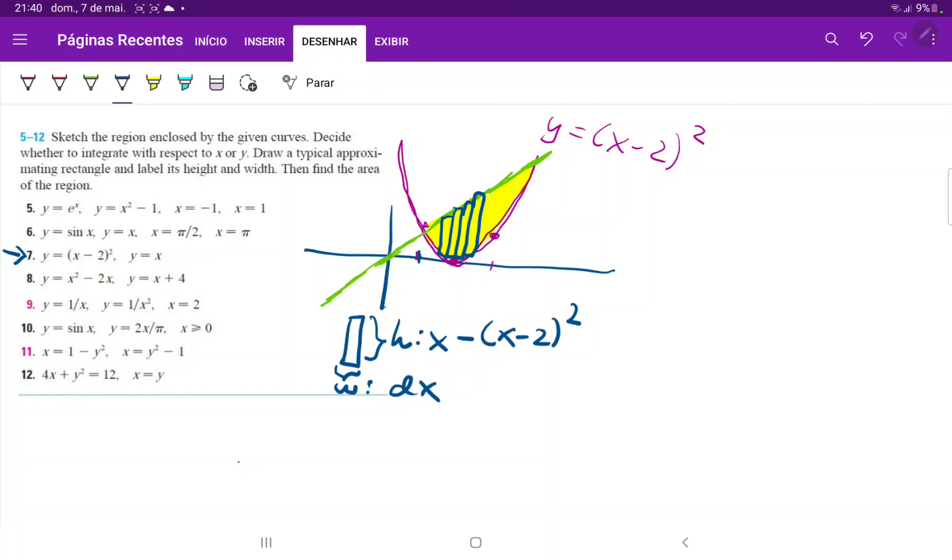So actually before we set up the integral we don't have the bounds, right, we can't tell where they intersect. So we do have to set these equations equal to each other so that we can find out this point over here and this point over here where they intersect.